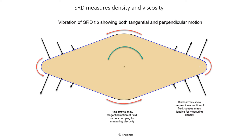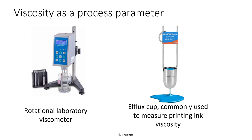SRD's diamond-shaped paddle pushes fluid ahead of it as well as shearing the fluid. Perpendicular fluid motion, shown by the black arrows in the diagram, causes mass loading of the resonator, decreasing its frequency. The red curved arrows show how the SRD's resonator also causes fluid shearing, leading to viscosity-dependent damping. Measuring frequency and damping of the resonator gives both density and viscosity of the fluid.